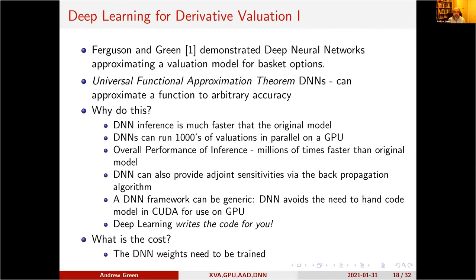We need to learn the derivative valuation routine. In a paper that Ryan Fervis and I wrote in 2018, we demonstrated that deep neural networks can be used to approximate valuation models for basket options — as the universal function approximation theorem already told us. Why do it? Deep neural network inference is typically very much faster than the original model, and we can run thousands of valuations in parallel on the GPU. The overall inference performance is millions of times faster than the original model encoded in C++ or some other language.